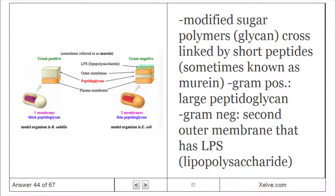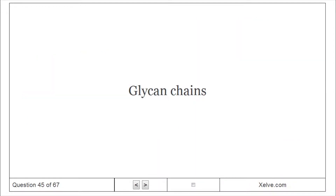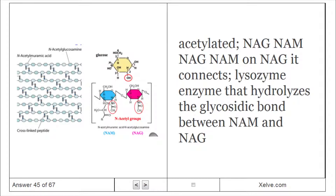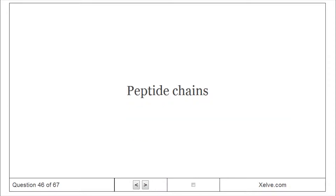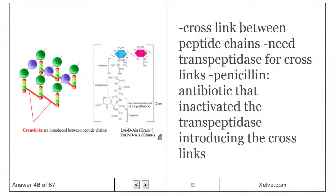Bacterial cell walls contain peptidoglycan — modified sugar polymers (glycan) cross-linked by short peptides, sometimes known as murein. Gram-positive bacteria have a large peptidoglycan layer. Gram-negative bacteria have a second outer membrane containing LPS. The glycan chains consist of alternating NAG and NAM units; lysozyme is an enzyme that hydrolyzes the glycosidic bond between NAM and NAG. Peptide chains are cross-linked between chains by transpeptidase. Penicillin is an antibiotic that inactivates the transpeptidase, preventing cross-links from forming.